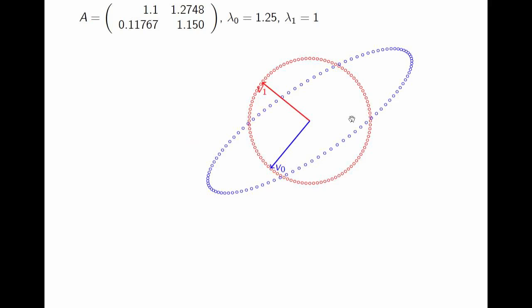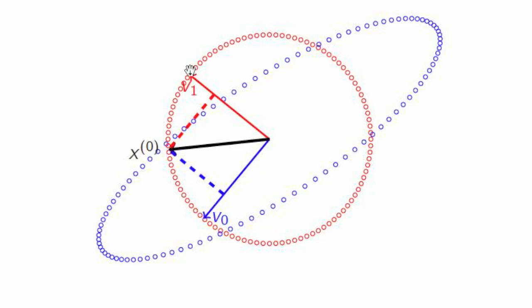Let's try to visualize the power method. Doing this for an n-by-n matrix would be difficult, so we choose a 2-by-2 matrix. This matrix has eigenvalues 1.25 and 1, so the one largest in magnitude is 1.25. As before, we swept out the unit circle with vector x and observed what values A times x attained — that's the blue oval. We start with some initial vector x0 of length 1.